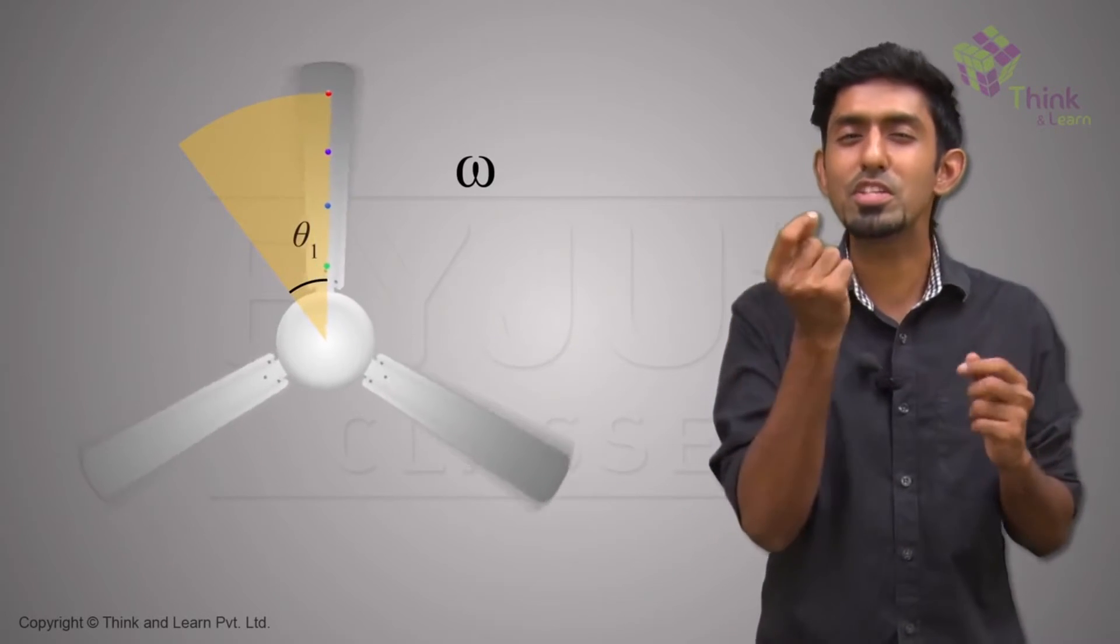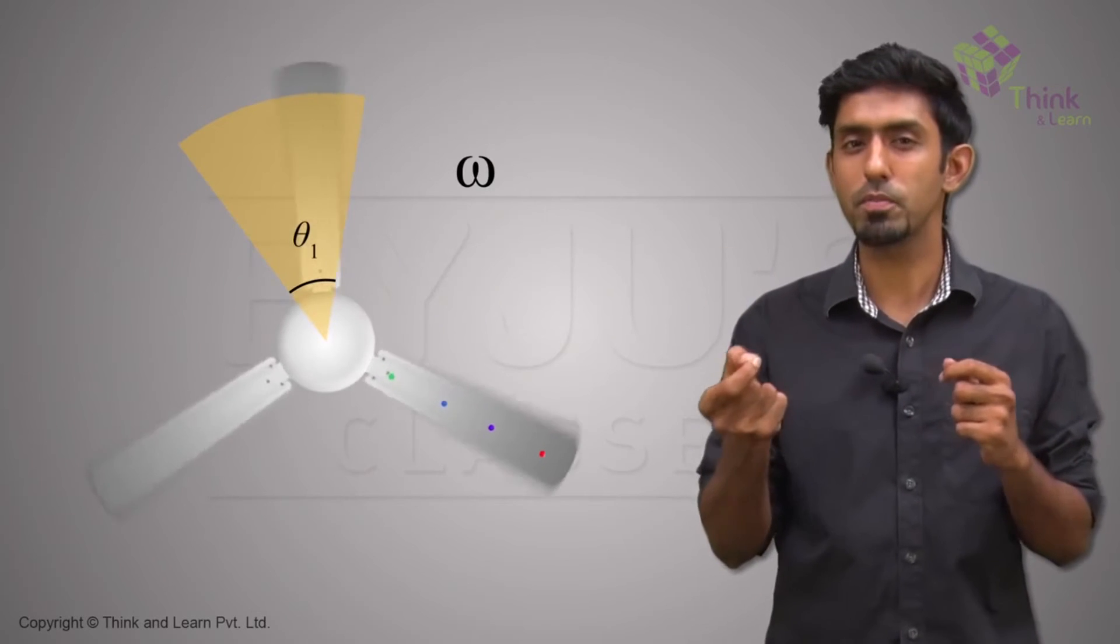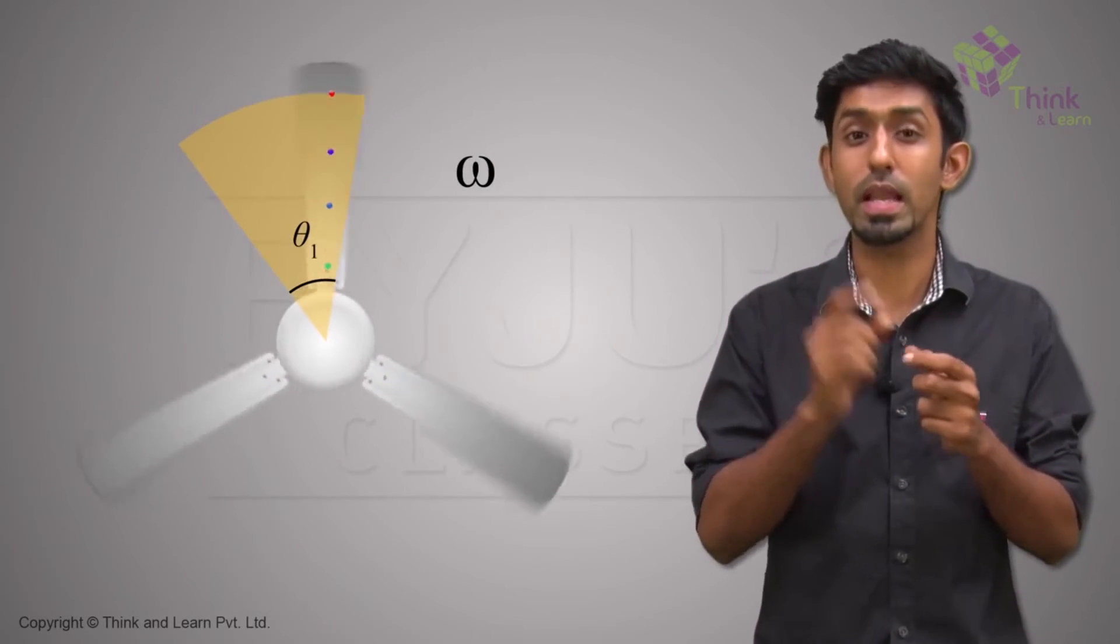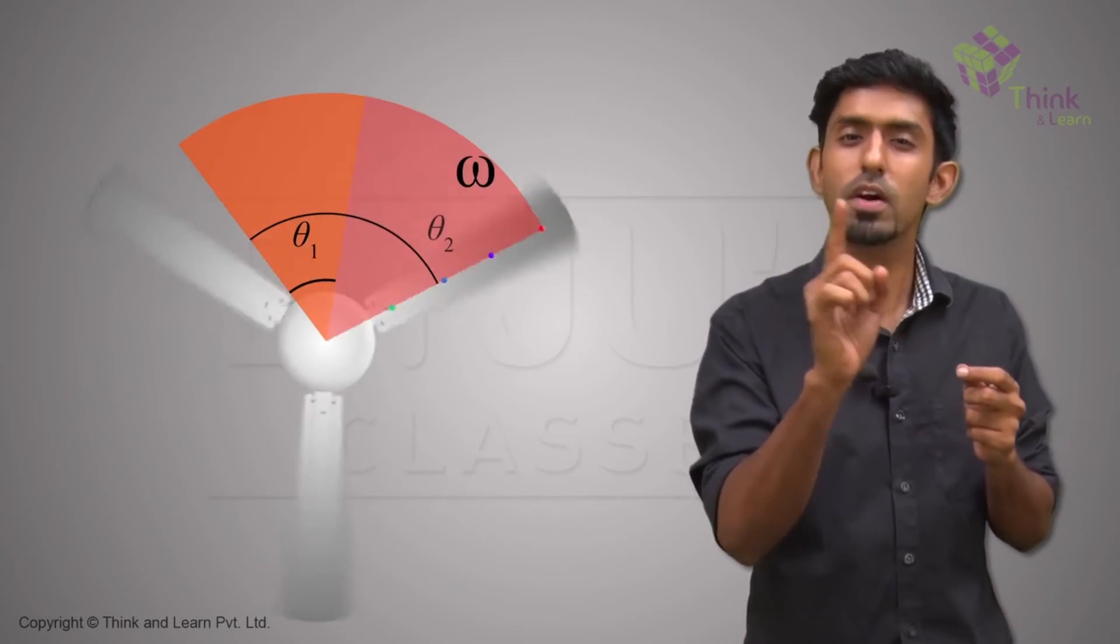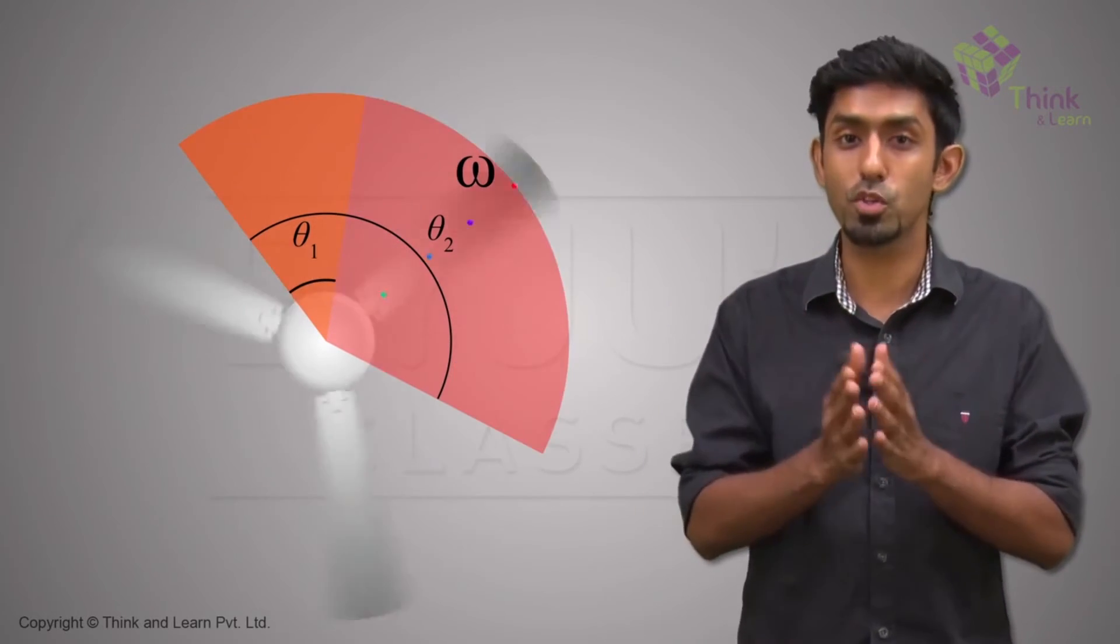They start covering a very, very small angle for a given time, which means that omega is very small to begin with. And as time goes, the fan starts going faster, which means it has a larger omega.